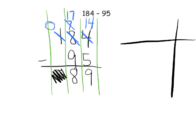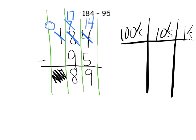I'm not going to do the place value chart here, but ideally if students needed it, they would have modeled 184 on their desk with number disks — one hundred, eight tens, and four ones. They probably wouldn't record it on paper; they'd just work with their physical models as they progress through the standard algorithm.